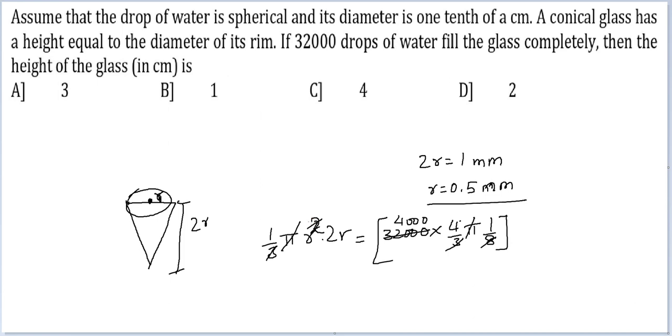2 and... sorry not this 2. This r squared means this 2 and this 2 cancel to give me r cubed is equal to 8000, or r is equal to 20.